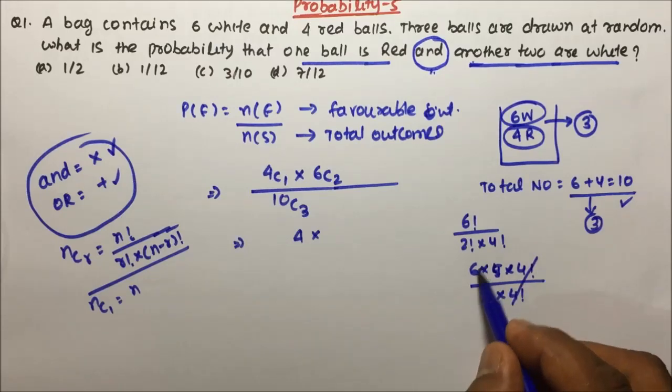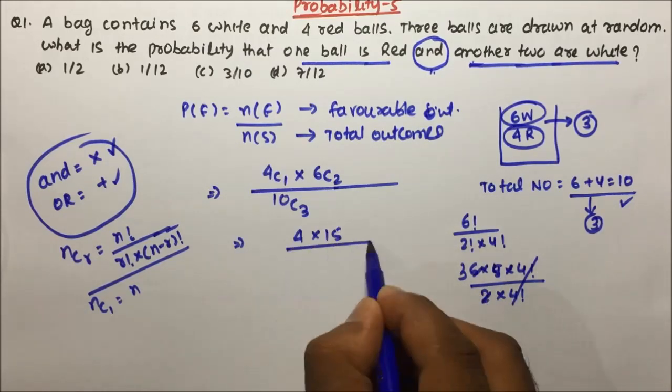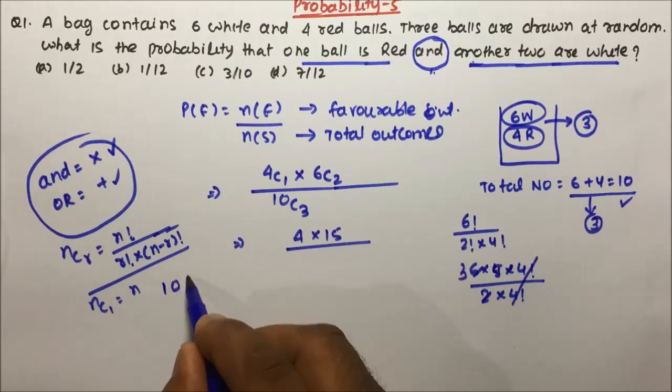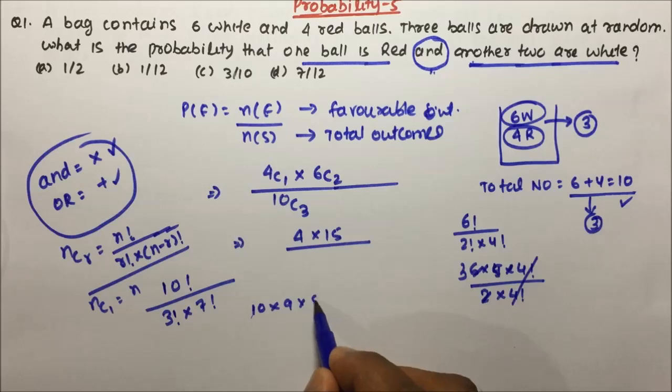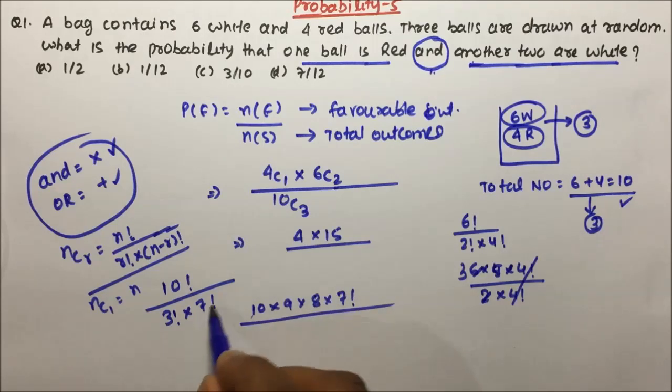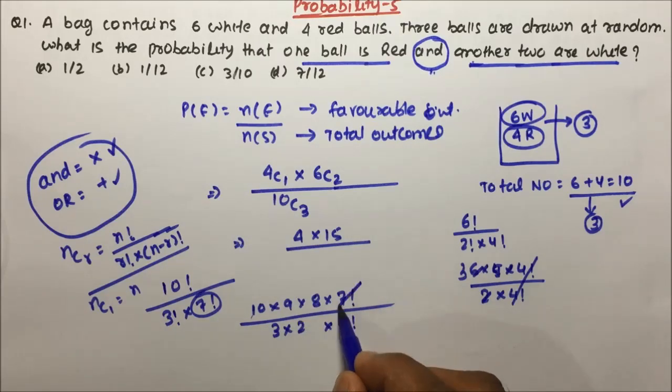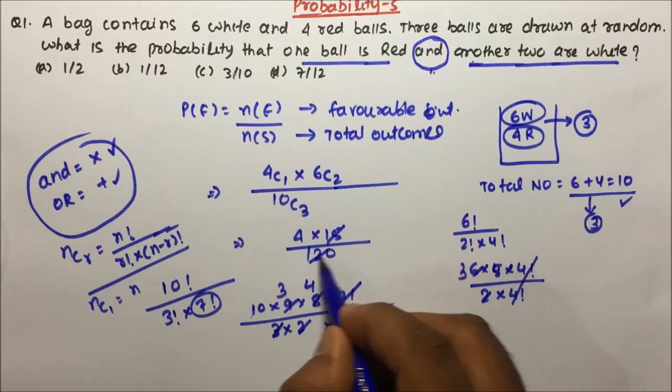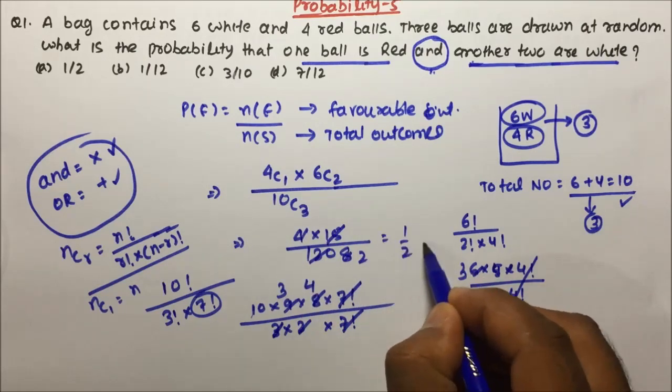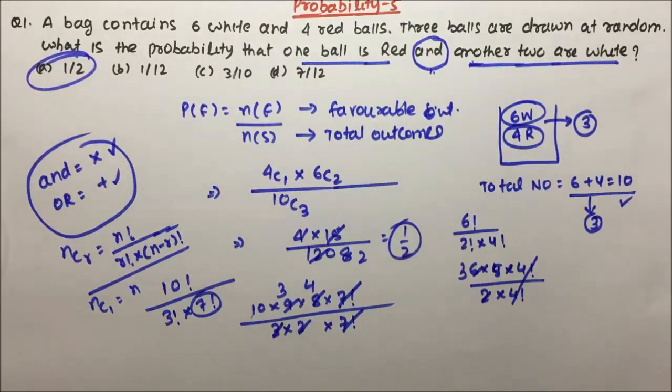Divided by 10C3. So 10C3 means 10 factorial divided by 3 factorial into 7 factorial. Now 10 factorial will be 10 into 9 into 8 into 7. 3 factorial will be 3 into 2. This and this got cancelled, 3 times, 2 4 times, so 120. So 15, 8 and 4, 2, so 1 by 2, that means 50 percent is the probability. So option A will become the correct answer for question number 1.